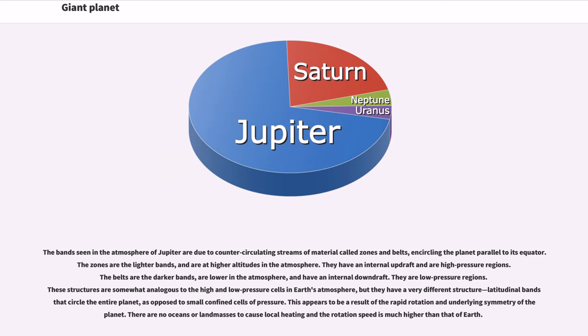The bands seen in the atmosphere of Jupiter are due to counter-circulating streams of material called zones and belts, encircling the planet parallel to its equator. The zones are the lighter bands, and are at higher altitudes in the atmosphere. They have an internal updraft and are high-pressure regions. The belts are the darker bands, are lower in the atmosphere, and have an internal downdraft. They are low-pressure regions.